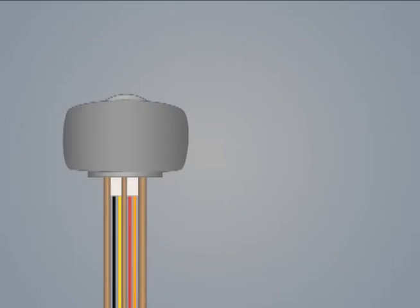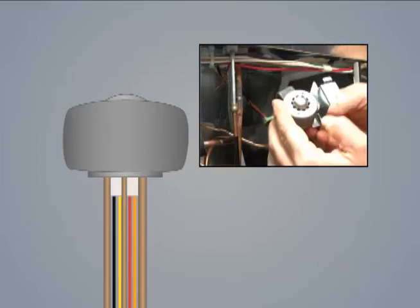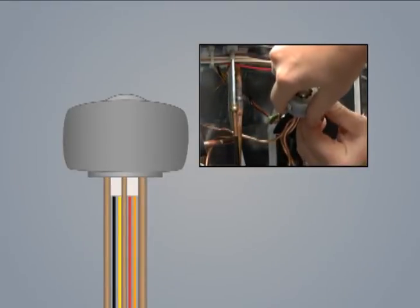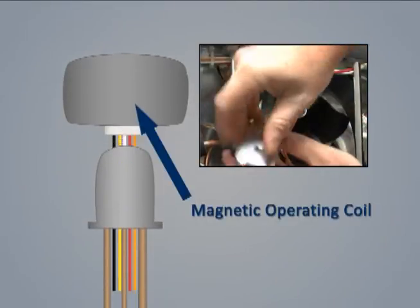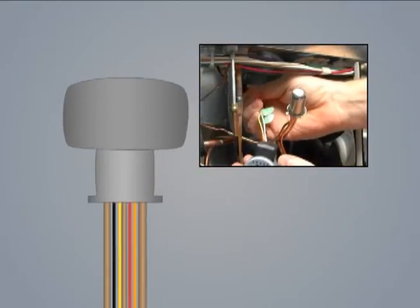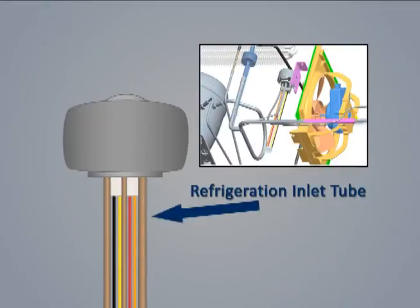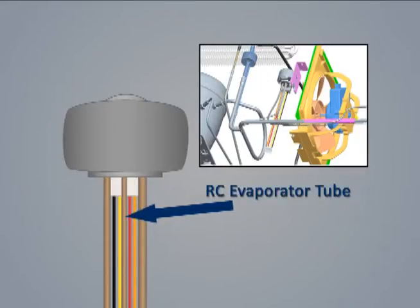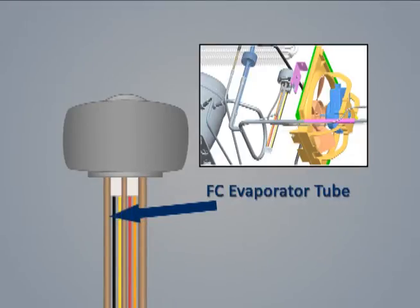Three-way rotary control valve. Refrigerant flow is controlled by an electronically controlled refrigerant valve. The valve is comprised of two parts: the magnetic operating coil and the hermetically sealed rotary valve. The refrigeration inlet tube is connected to the outlet of the filter dryer. This tube is the largest diameter of the three tubes connected to the valve body. All three tubes connected to the valve body are different diameters to ensure proper installation. One outlet tube is connected to the cap tube of the RC evaporator, and the remaining tube is connected to the cap tube of the FC evaporator.